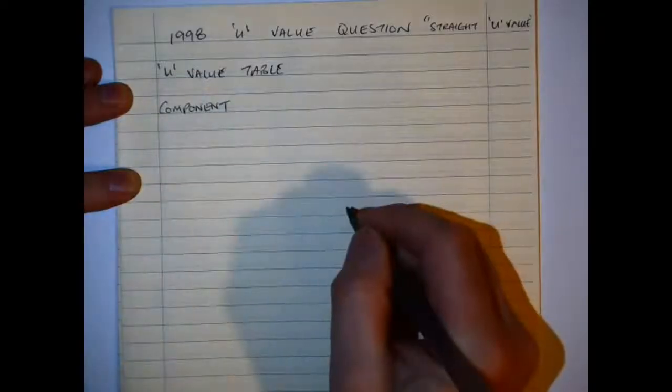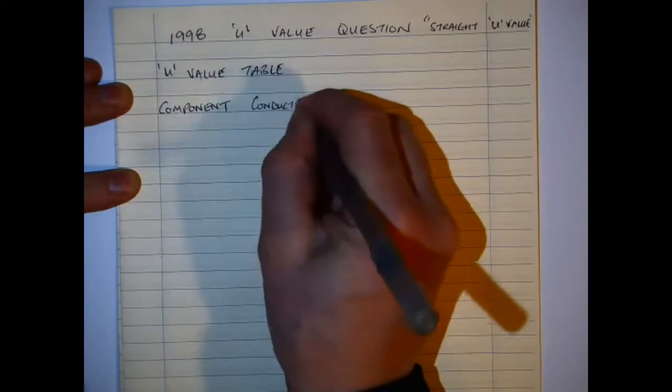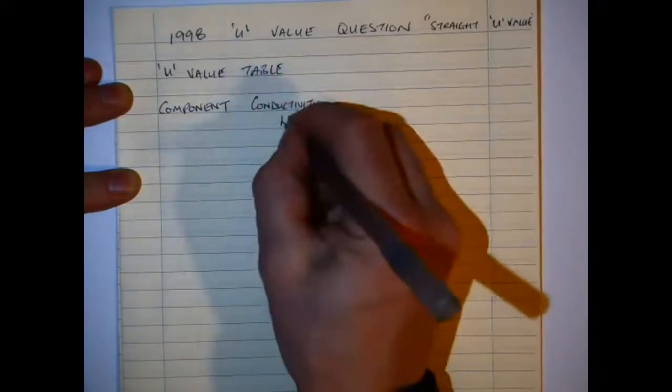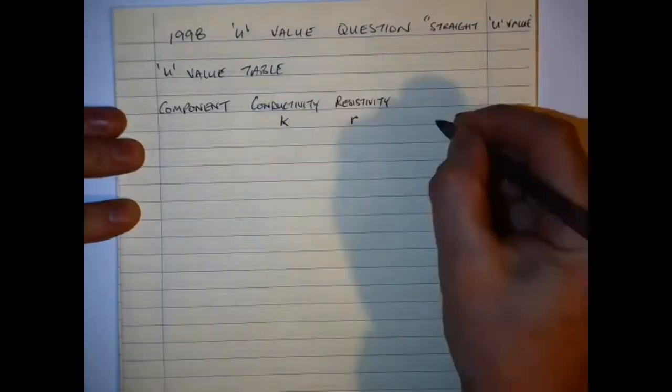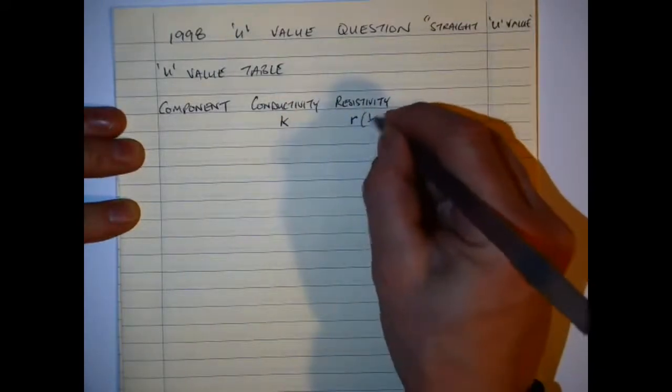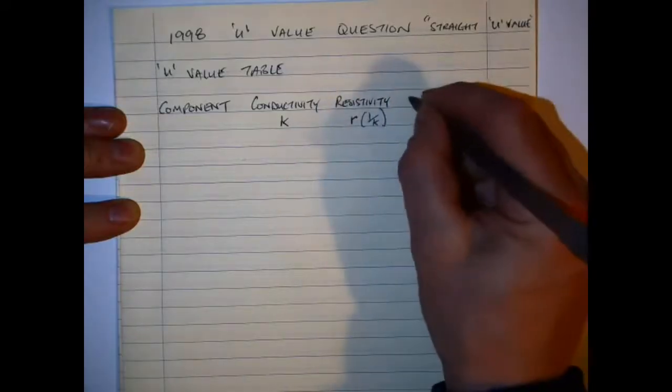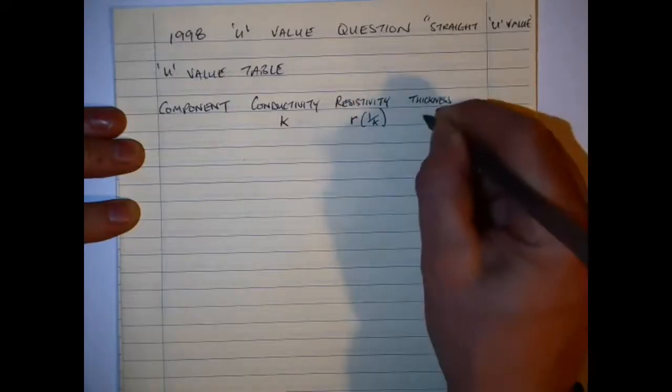It won't change from any of these, so the first thing you'll put down is the component, whatever that element is listed in the question. The conductivity, which is also referred to as a k value. The resistivity, it's just referred to as an r value or one over k. And then you have your thickness of material which is measured in meters, which I'll be speaking about in a little while.